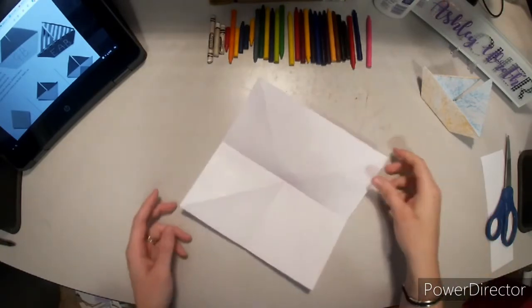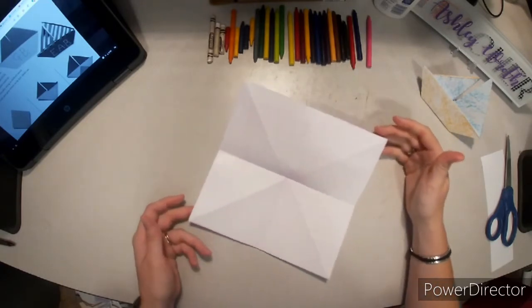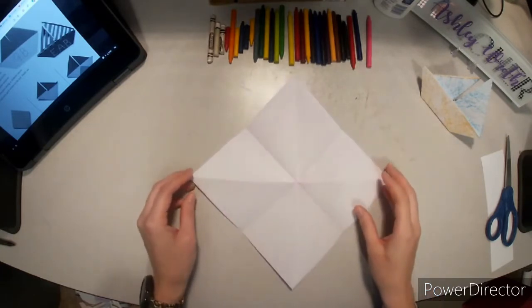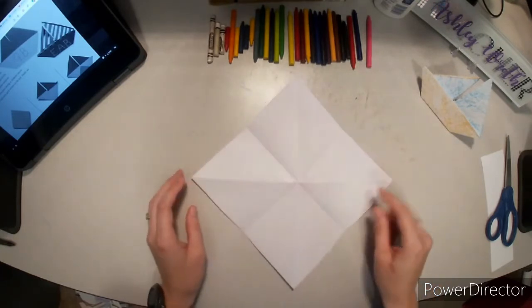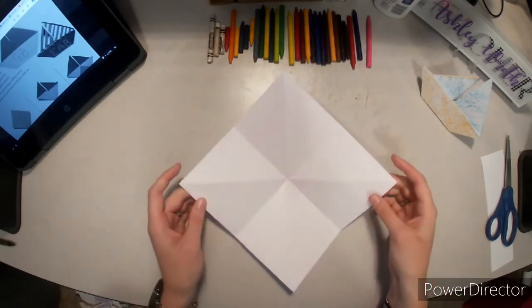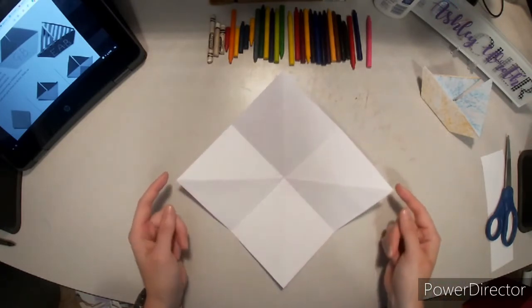And what we want to do is bring our corners in. We're going to turn it like a diamond. And if your paper is popping up in the middle like this, what you're going to want to do is push it down until it pops out in the other direction.